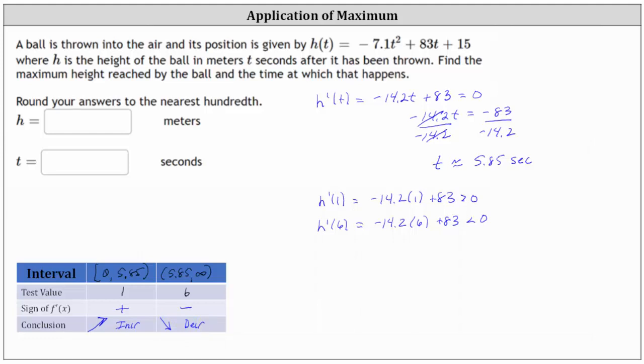This indicates the height function is decreasing or going downhill from left to right over this entire interval. Analyzing the table, we should be able to recognize if the function changes from increasing to decreasing at t equals 5.85, we would have a high point or a relative maximum, or in this case, an absolute maximum at the time of 5.85 seconds.